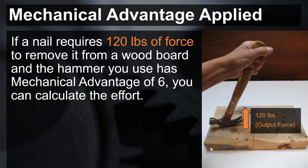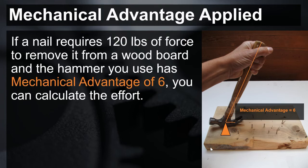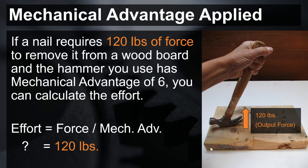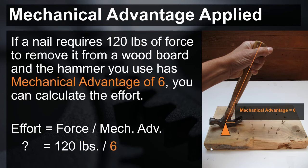If a nail requires 120 pounds of force to be removed from a wood board and the hammer that you use has a mechanical advantage of six, you can calculate the effort. To do this, you would use the equation in which you find the effort. Since we don't know the effort, but we do know the force and the mechanical advantage, we can solve using this equation. The force in this case is 120 pounds. This is the output force that the hammer is providing on the nail. The mechanical advantage is six. This is calculated by the ratio of the length of the handle to the length to the nail.